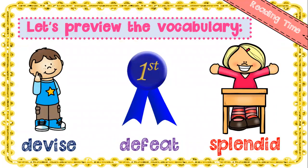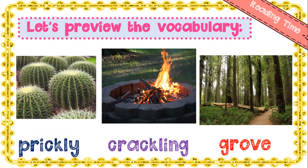Now let's look at some vocabulary — words you're going to see in the story that you need to know the meaning of to help with your comprehension. 'Devise' means coming up with a thought or a plan — he's devising a plan. 'Defeat' means you beat someone — you're winning over them. 'Splendid' is wonderful — with the sun shining, it was a splendid day for the park. 'Prickly' is kind of pokey, covered with sharp points — the cactus was prickly. 'Crackling' means making sharp cracking noises — a fire crackles loudly. A 'grove' is a small growth of trees without underbrush — behind my house there is a grove of orange trees.